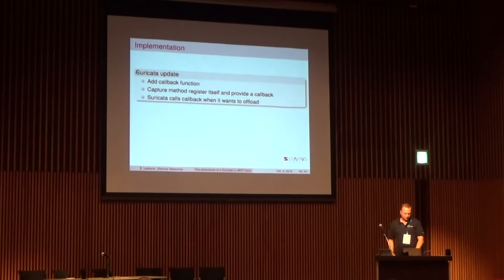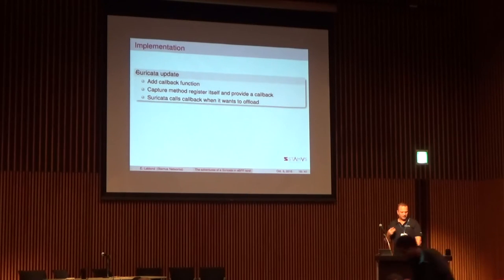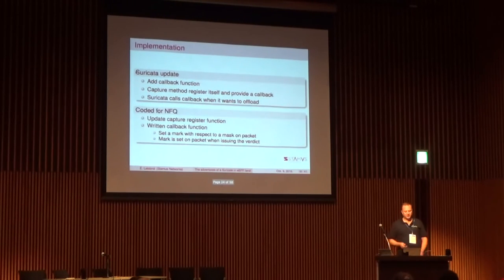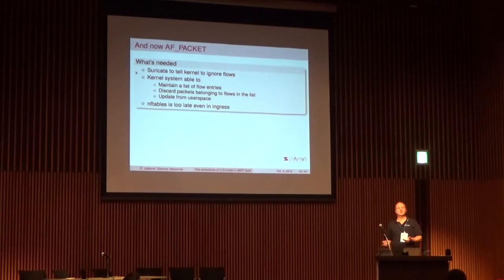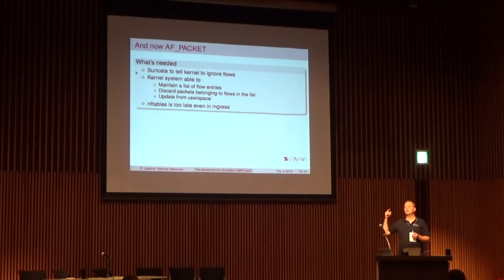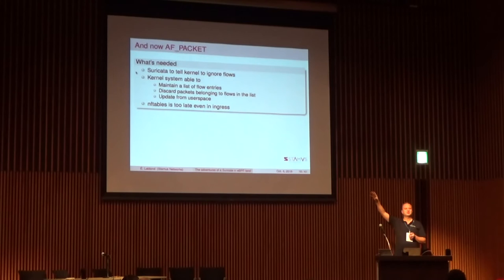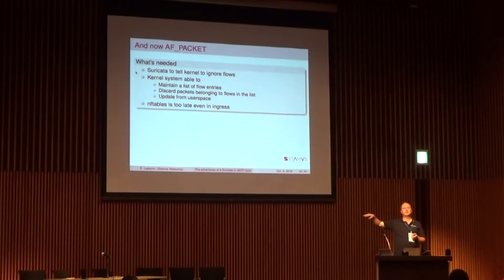On the Suricata side, the basic method to implement bypass was really simple. We introduced a callback that is defined by the capture method and is called when we don't want to see the packet anymore. For NFQ it was super simple — just setting a mark on the packet and then the netfilter rule set behind simply doesn't send to user space packets with that mark. But that's only for IPS. For IDS using AF_PACKET, it's more complicated — we need to say we don't want any more packets for this flow, which means we need a flow table known by the capture method.